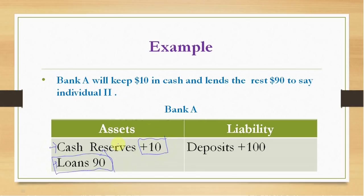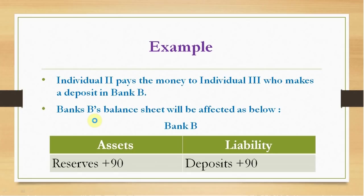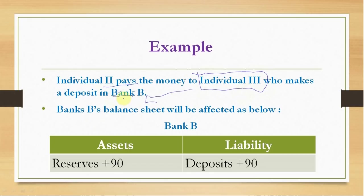Bank A will extend a credit of $90. The first bank, Bank A, will lend all the $90 to an individual — suppose Individual B. Individual B can spend $90 from his loan account. Suppose he withdraws all the $90 and pays it to a third individual. That third individual can then make a deposit of $90 with Bank A or any other bank. Let us assume he deposits the $90 in Bank B.